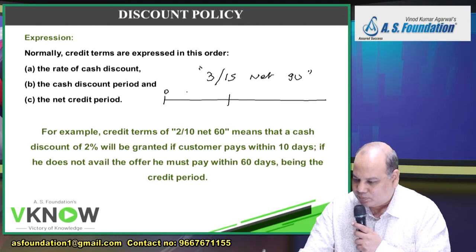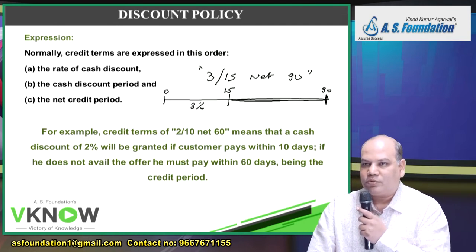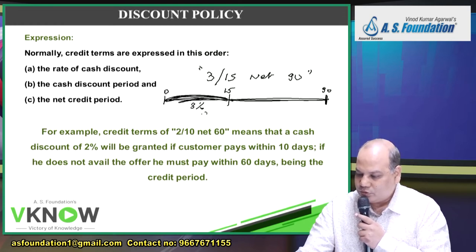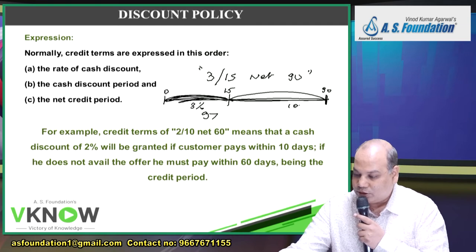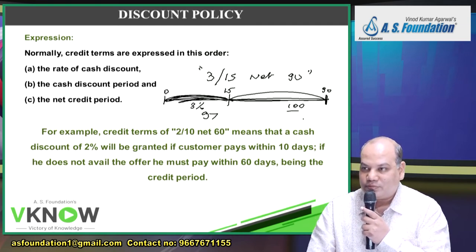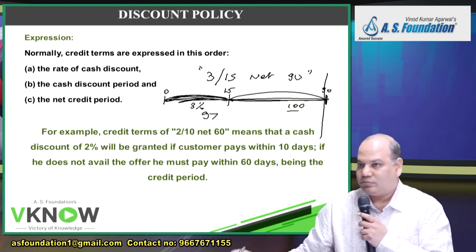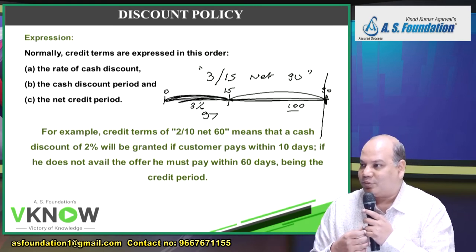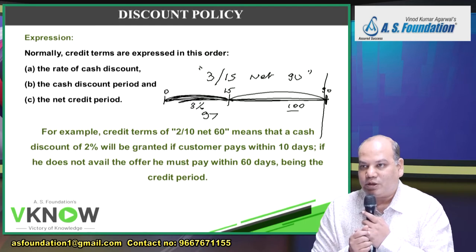For example, '3/15 Net 90' means: if you pay within 15 days, a 3% cash discount is given. If you don't avail the offer, you must pay within 90 days. If you pay between 0 to 15 days, you pay only 97% of the invoice amount; after that, you pay 100%. Some companies also add an interest clause — if you pay after 90 days, interest at 24% per annum will be charged. So: pay early to get a discount, or delay and pay interest.